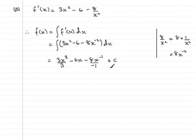Let's tidy this up. The first term, those 3s cancel—3 into 3 goes once—so we get simply x³, then -6x for the second term. And this last term, we have -8 divided by -1, so that's +8. And x^(-1) means 1/x, so 8 times 1/x is just going to leave me with 8/x, and then we have plus that constant of integration c.